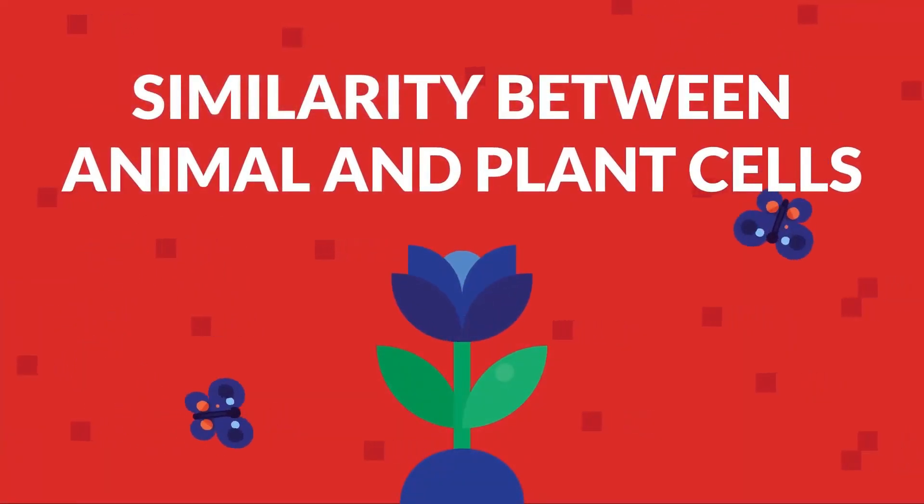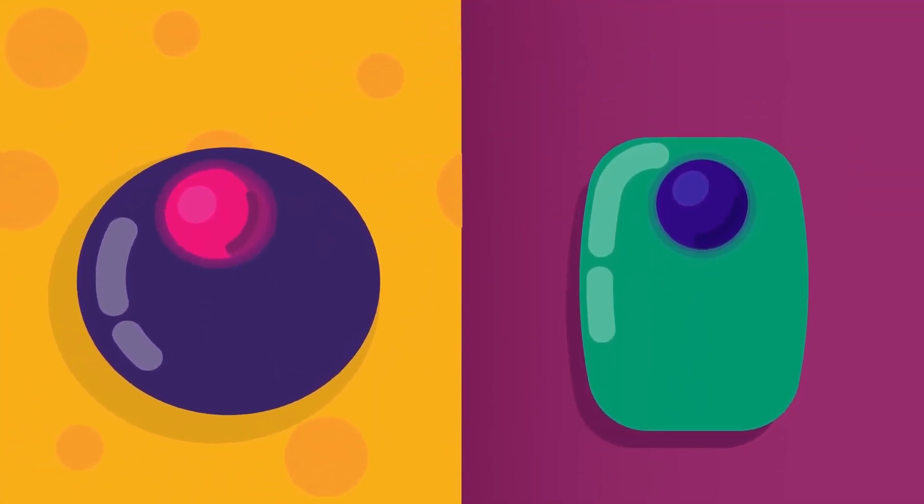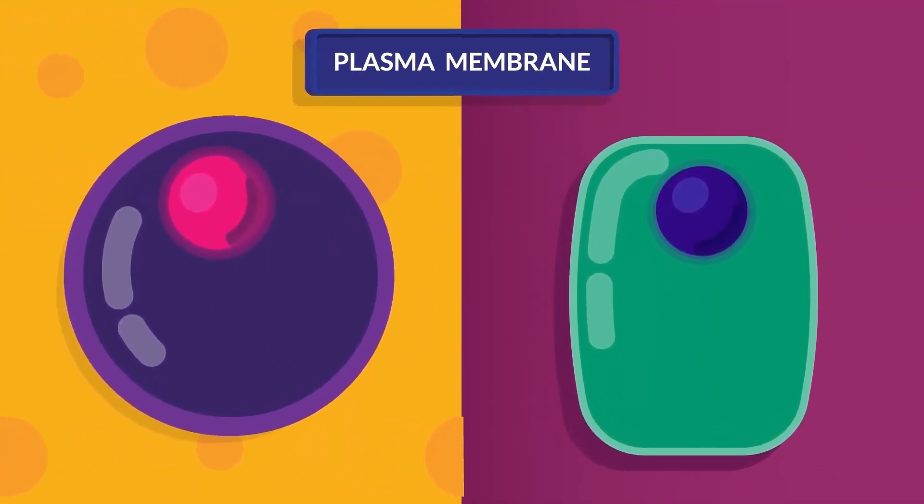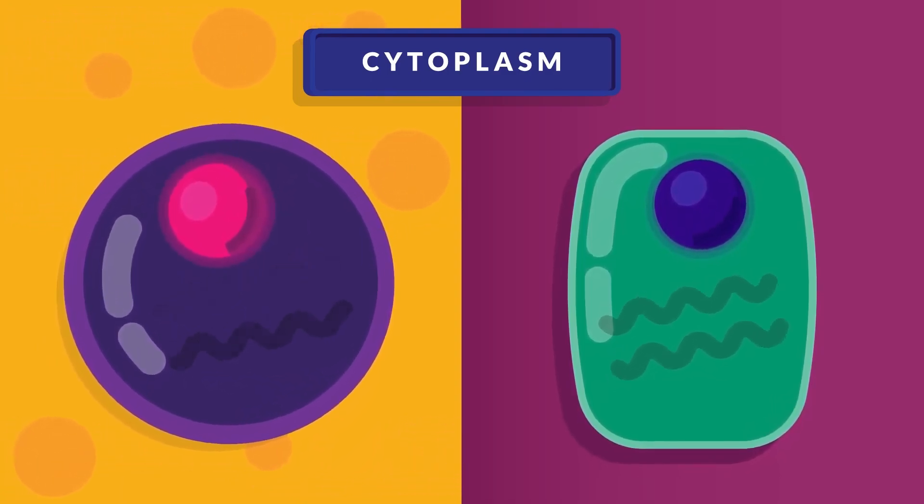Similarity between animal and plant cells. Both animal and plant cells are surrounded by a thin, semi-permeable membrane called plasma membrane. Surrounding all the organelles is the cytoplasm, a jelly-like substance that covers the whole cell from the plasma membrane to the nucleus. Both plant and animal cells have them.